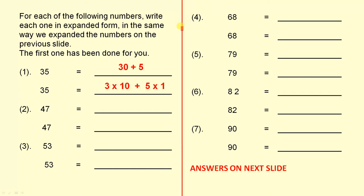For each of the following numbers, write each one in expanded form in the same way we expanded the numbers on the previous slide. The first one has been done for you. So 35 we can write as 30 plus five, and 35 is three lots of ten plus five lots of one.